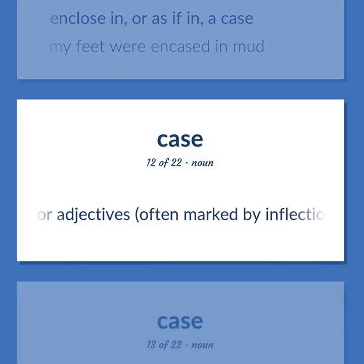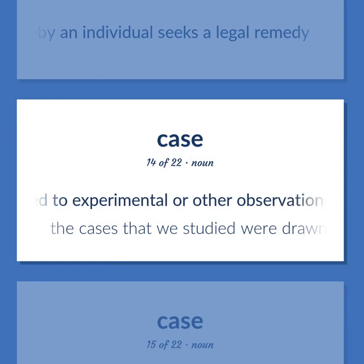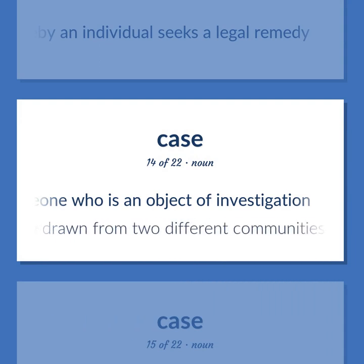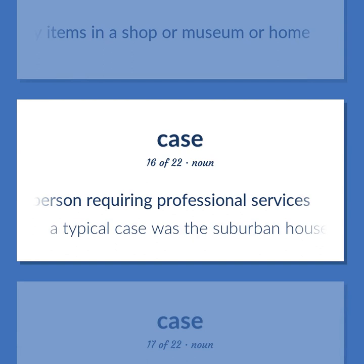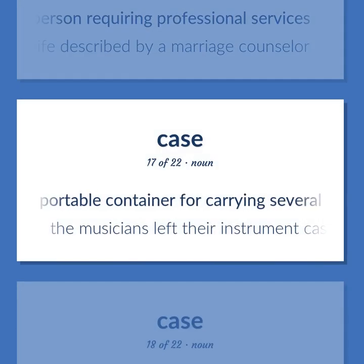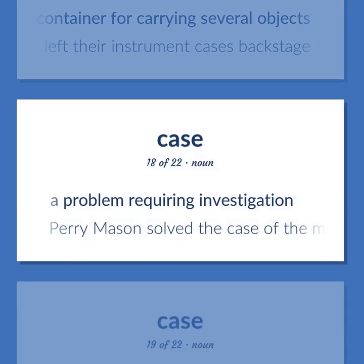Nouns or pronouns or adjectives, often marked by inflection, related in some way to other words in a sentence. A comprehensive term for any proceeding in a court of law whereby an individual seeks a legal remedy. A person who is subjected to experimental or other observational procedures; someone who is an object of investigation. The cases that we studied were drawn from two different communities. A glass container used to store and display items in a shop or museum or home. A person requiring professional services. A portable container for carrying several objects. The musicians left their instrument cases backstage. A problem requiring investigation. Perry Mason solved the case of the missing heir.